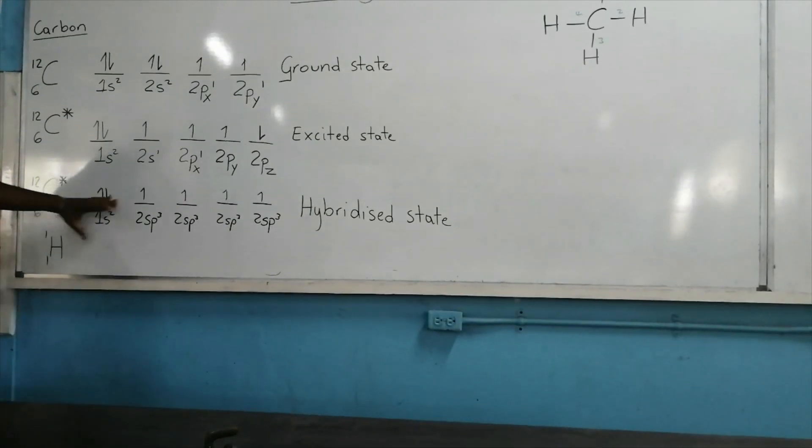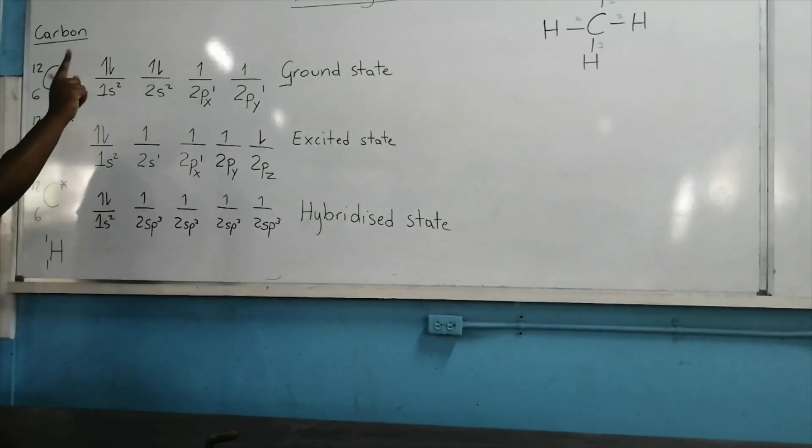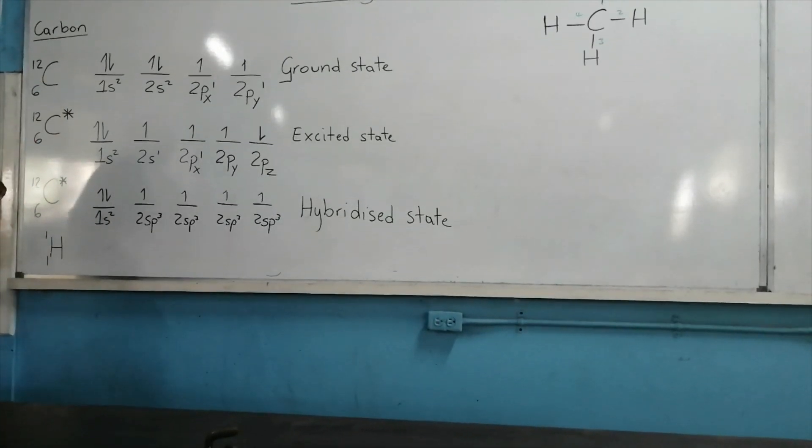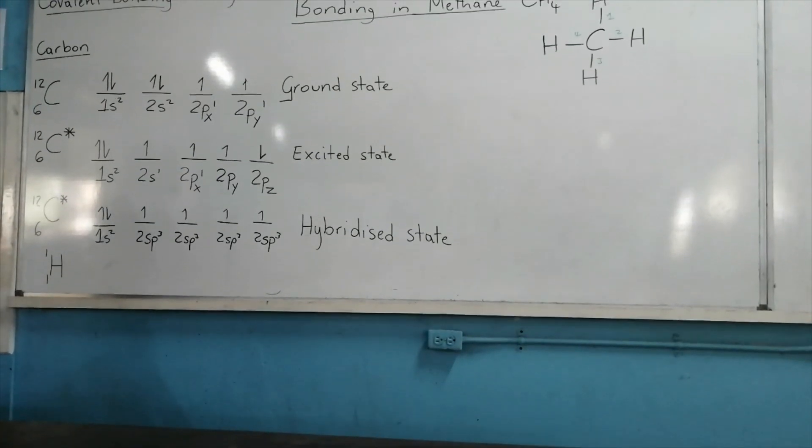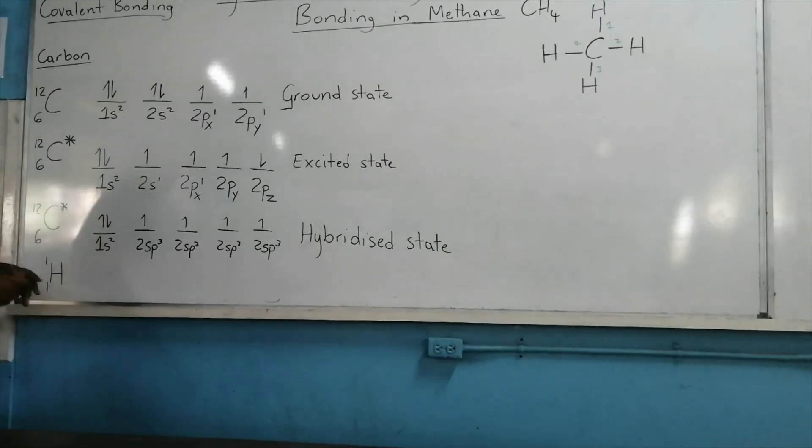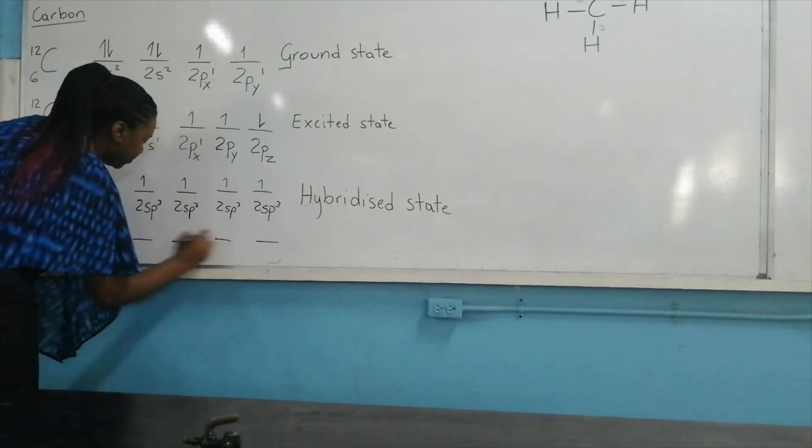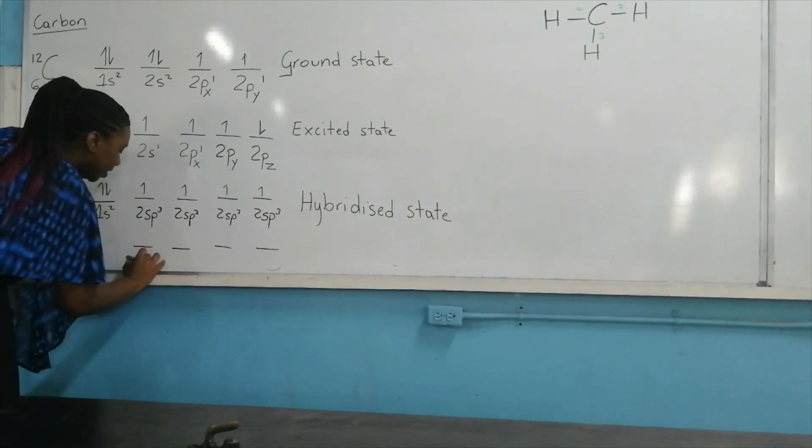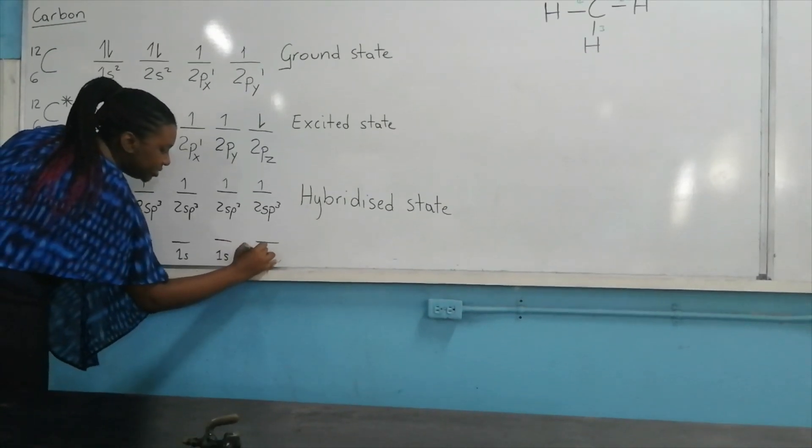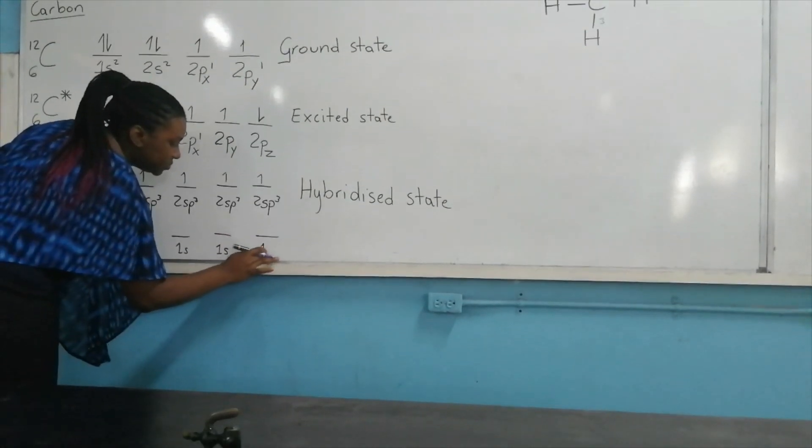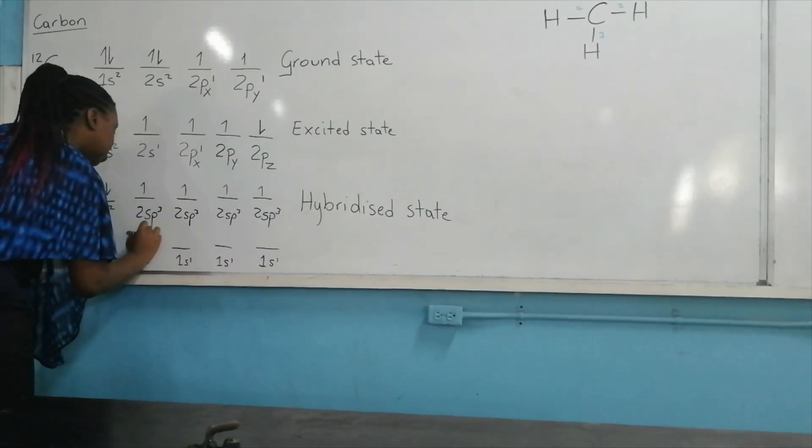When carbon is like this, it's still excited. And guess what? It's not ready for bonding. So in methane, we have 1, 2, 3, 4 covalent bonds. So we need 4 hydrogen atoms. The electronic configuration for hydrogen, of course, is 1s. So let me show the bonding that will take place now in methane. So we have the 1s orbital for 4 different hydrogen atoms, and of course, 1 electron is found in each.